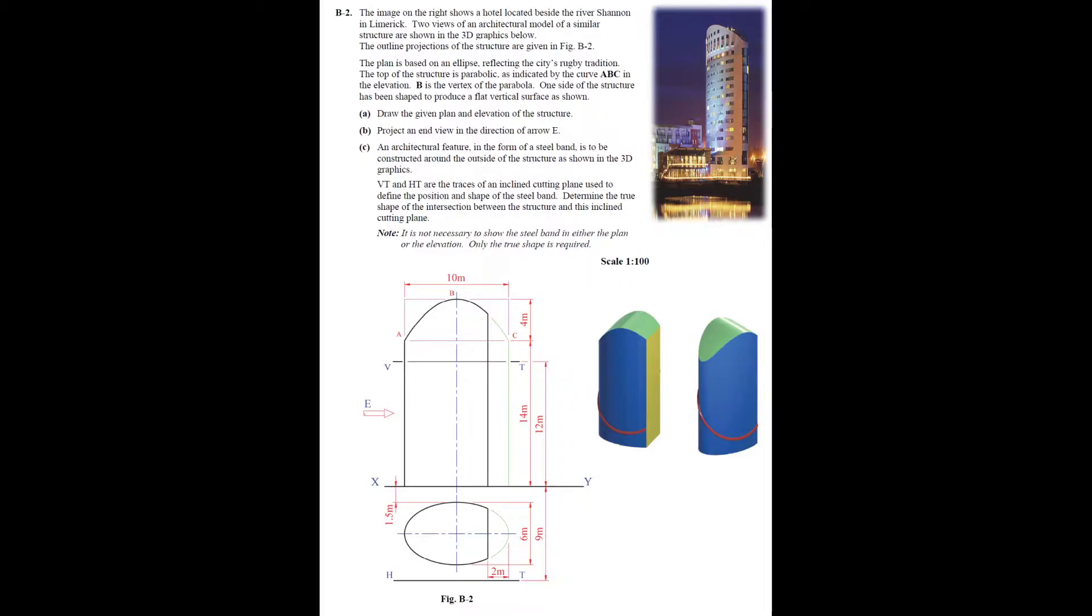The outline projections of the structure are given in figure B2. The plan is based on an ellipse reflecting the city's rugby tradition. The top of the structure is parabolic as indicated by the curve ABC in the elevation. B is the vertex of the parabola. One side of the structure has been shaped to produce a flat vertical surface as shown.